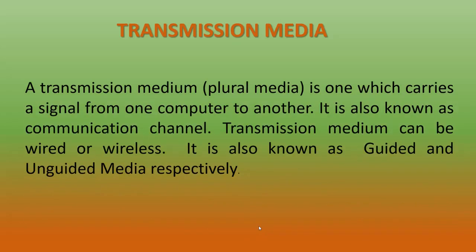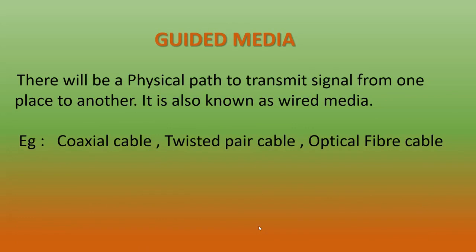Transmission media is divided into two types: guided media and unguided media. Guided media means there will be a physical path or wire to transmit data between two devices. For example, coaxial cable, twisted pair cable, and optical fiber cable are all different types of guided media. Guided media is also known as wired media.